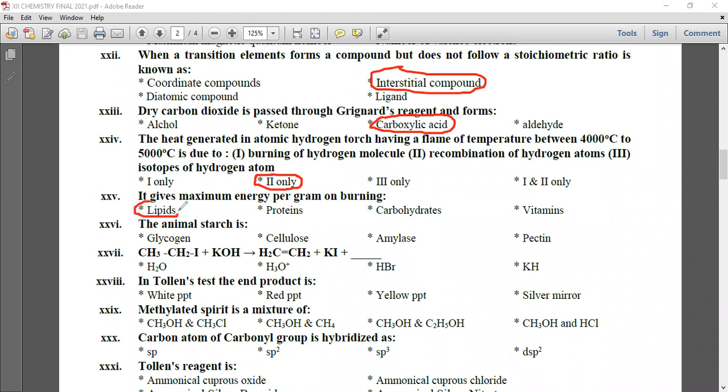It gives maximum energy per gram on burning. Lipids give nine calories per gram, while carbohydrates and proteins give four calories per gram, so lipids give maximum energy. Animal starch is glycogen. The reaction CH3CH2I plus KOH gives CH2=CH2 plus KI plus H2O.